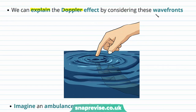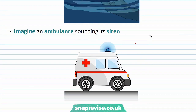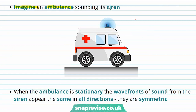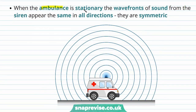We can explain the Doppler effect by considering these wave fronts. Imagine an ambulance sounding its siren. When the ambulance is stationary, the wave fronts of sound from the siren appear the same in all directions — they are symmetric. Here we have a drawing of our stationary ambulance and you can see that on both sides the wave fronts of sound are exactly the same.